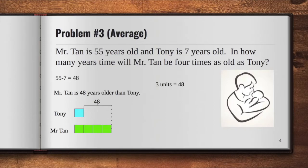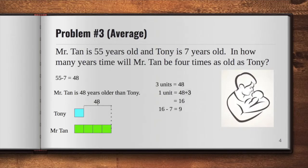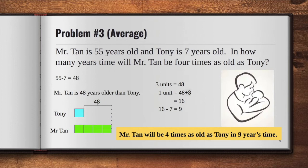So three units is equal to 48. And to get the representation for Tony's age, which is one unit, we have to divide it by three, and we will get 16. One unit represents Tony's age after some years when Mr. Tan is four times as old as him. So we have to get the time difference between this age and Tony's current age, which is seven. So 16 minus 7 will give us 9. Therefore, Mr. Tan will be four times as old as Tony in nine years' time.